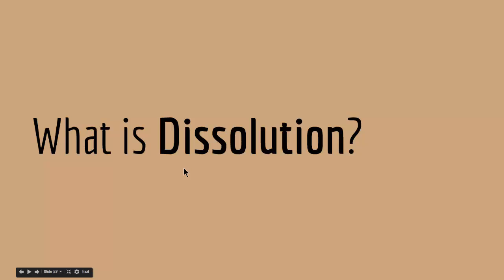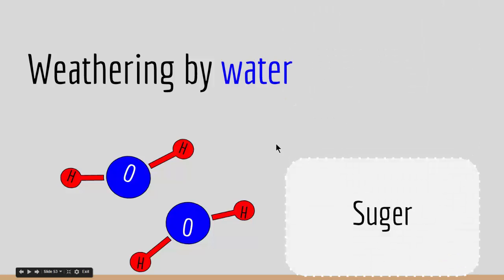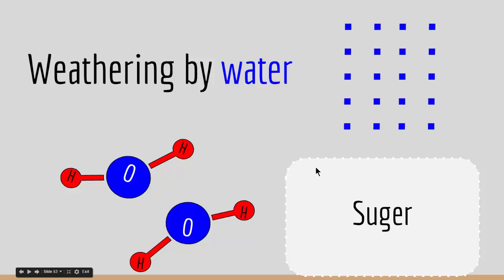The first one is dissolution. What is dissolution? Dissolution is weathering by water. Imagine you have a block of sugar and water drops on it. You can imagine that after a while this solid block of sugar will be dissolved and nothing of the block of sugar will be left over. This is exactly what dissolution is. If you have a rock that contains a chemical component that is highly reactive with water, when water interacts with this rock, after a while it chemically weathers it away.